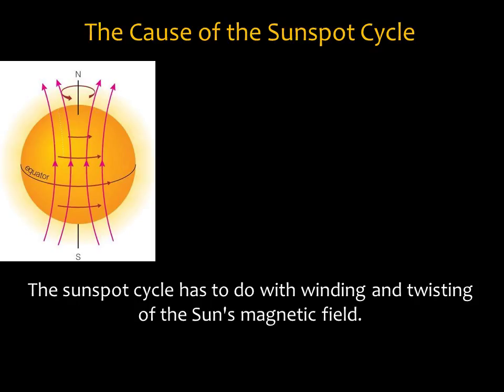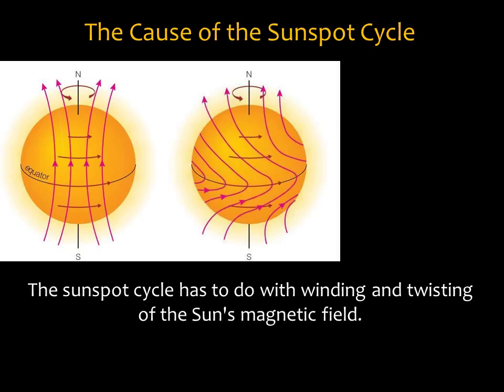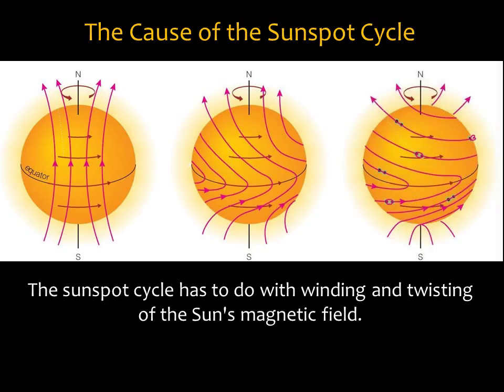The precise reasons for the sunspot cycle are not fully understood, but the leading model has to do with magnetic fields and the sun's rotation. We can imagine what happens to the magnetic field lines that start out running north-to-south. Because the sun rotates faster near its equator than at its poles, the field lines bend ahead at the equator. The field lines become more and more twisted with time, and sunspots form when the twisted lines loop above the sun's surface.